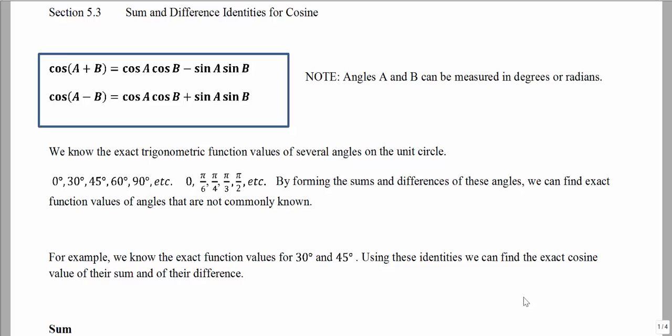The sum and difference identities for cosine can help us find cosine values of angles that we may not already be familiar with. If we're looking for cosine of a sum of two angles, so the input would be a plus b, the identity can be found by taking cosine of the first angle times cosine of the second angle, subtracting sine of the first angle times sine of the second angle.